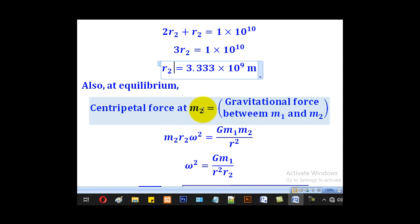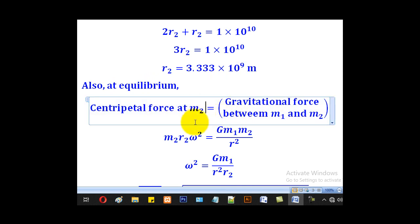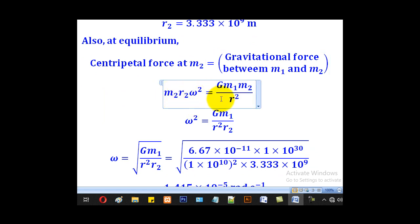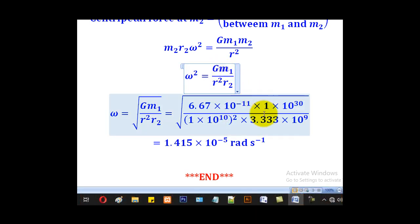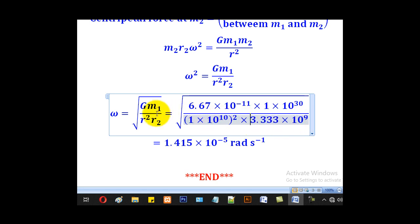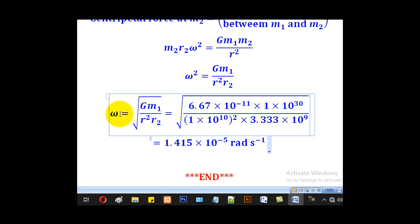At equilibrium, the centripetal force at M2 equals the gravitational force between M1 and M2. The expression for centripetal force at M2 equals G M1 M2 over R squared. M2 cancels, and making omega the subject gives omega squared equals G M1 over R squared times R2. Substituting G equals 6.67 times 10 to the negative 11, M1 equals 1 times 10 to the 30, R equals 1 times 10 to the 10 squared, and R2 equals 3.333 times 10 to the 9, then taking the square root gives omega equals 1.415 times 10 to the negative 5 radians per second.